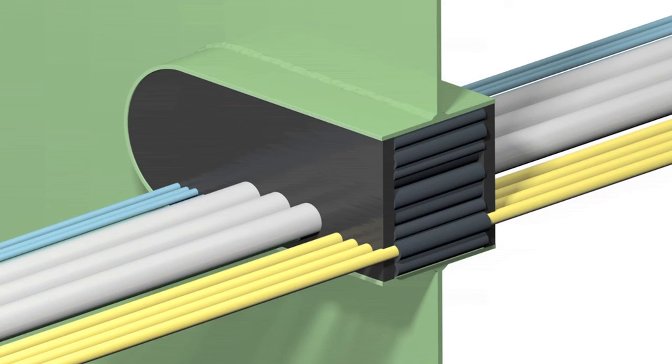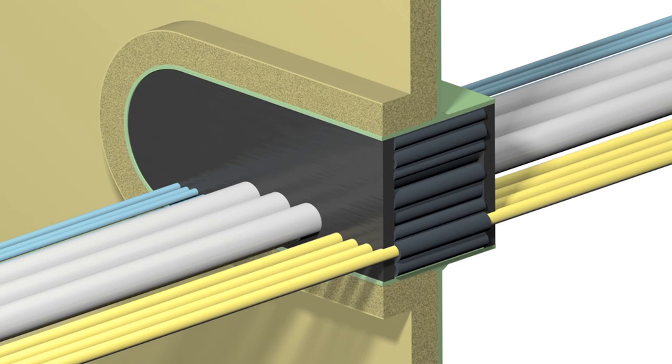For A-class penetrations, which are insulated, the rise multi-cable transit frame needs to be insulated only at the insulated side of the bulkhead or the lower side of the deck. No insulation is required on the cables or the face of the transit.